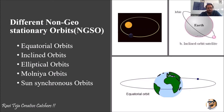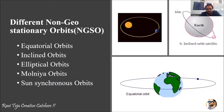Hello everyone, welcome to the course of satellite communications. In today's class we are going to learn about various non-geostationary orbits — in short, we also call them NGSO. There are several orbits considered as non-geostationary orbits, and the most important ones are equatorial orbits, inclined orbits, elliptical orbits, Molnia orbits, and sun synchronous orbits. Let us see how these orbits differ from each other.